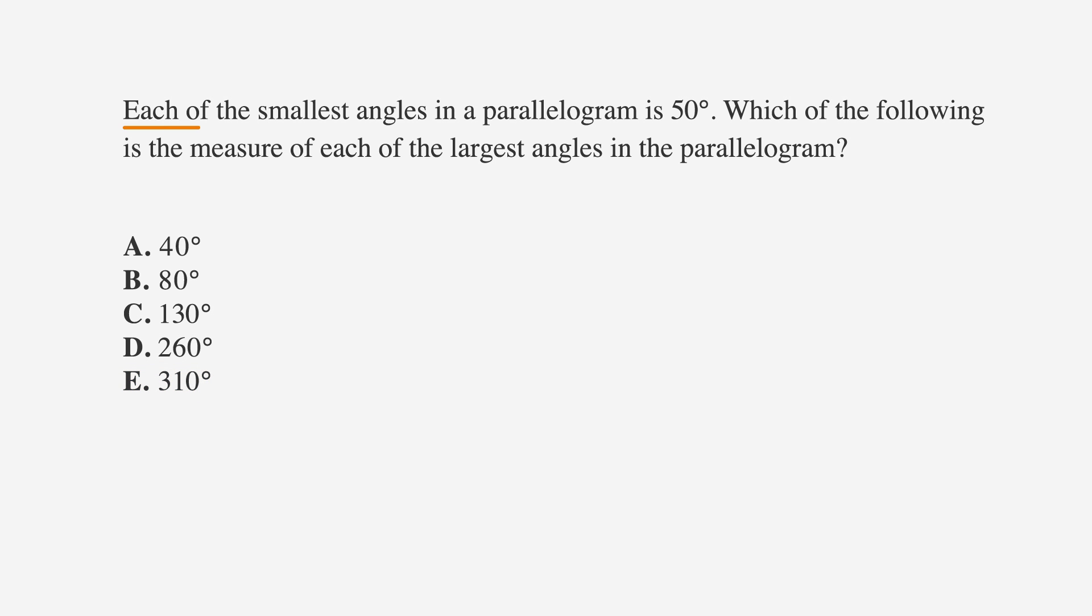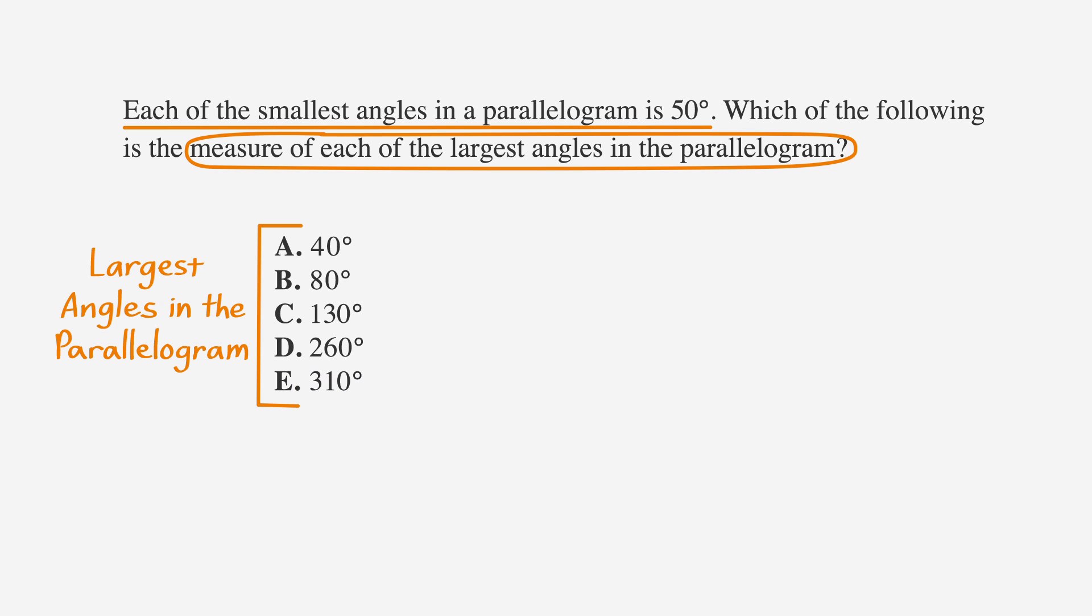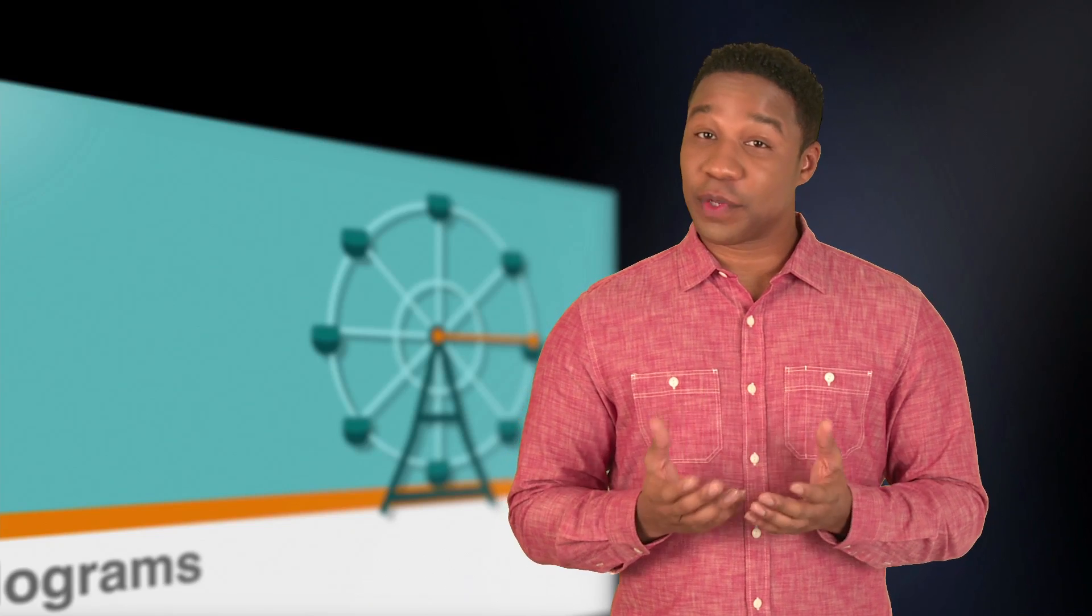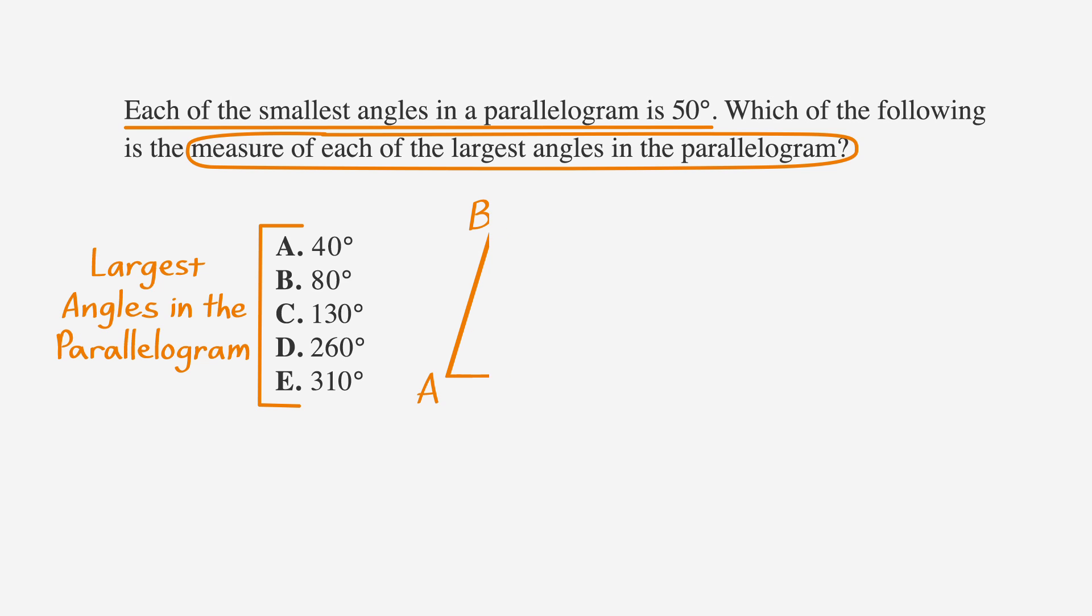Let's organize the information by underlining, circling, and labeling the answer choices. Since we have a geometry problem without a picture, we've got to draw one. All right, let's draw this sucker out.